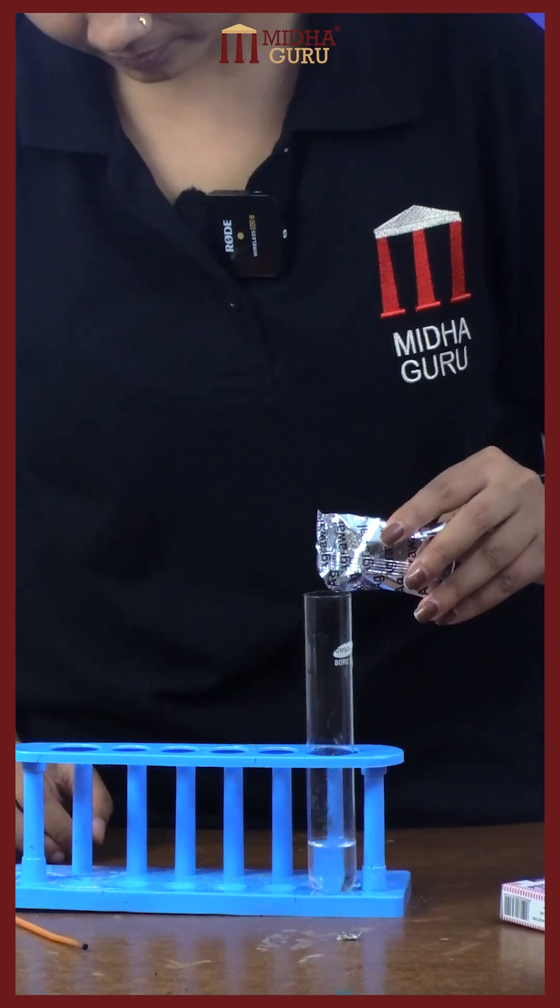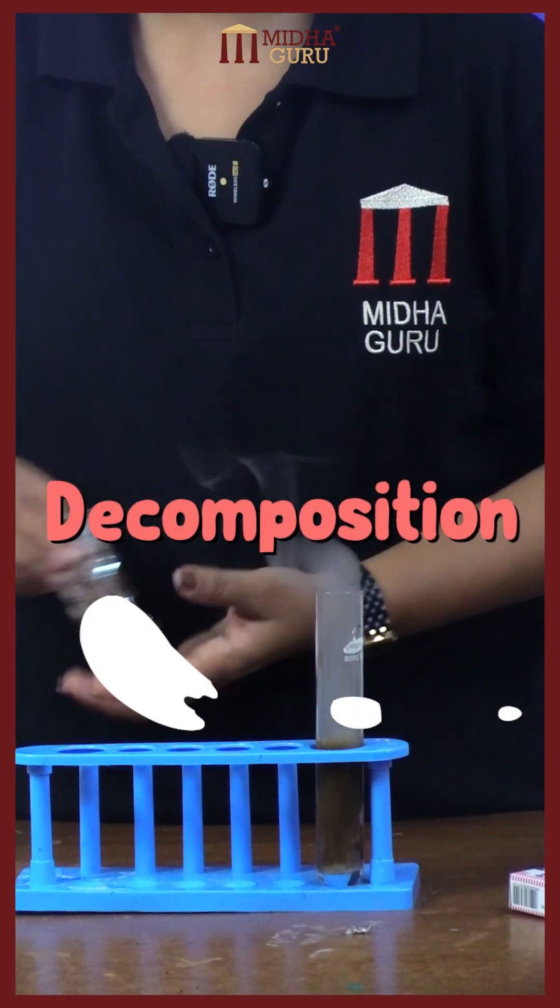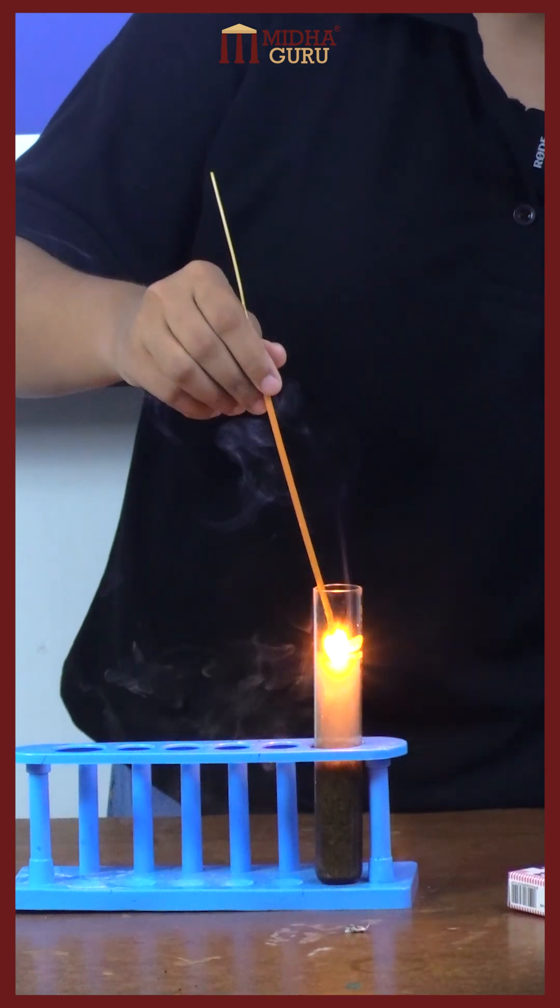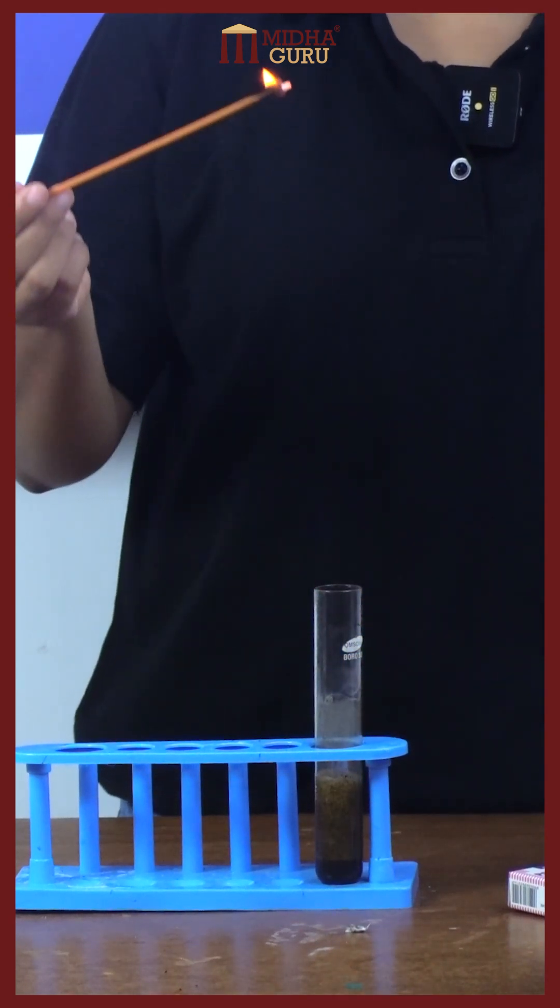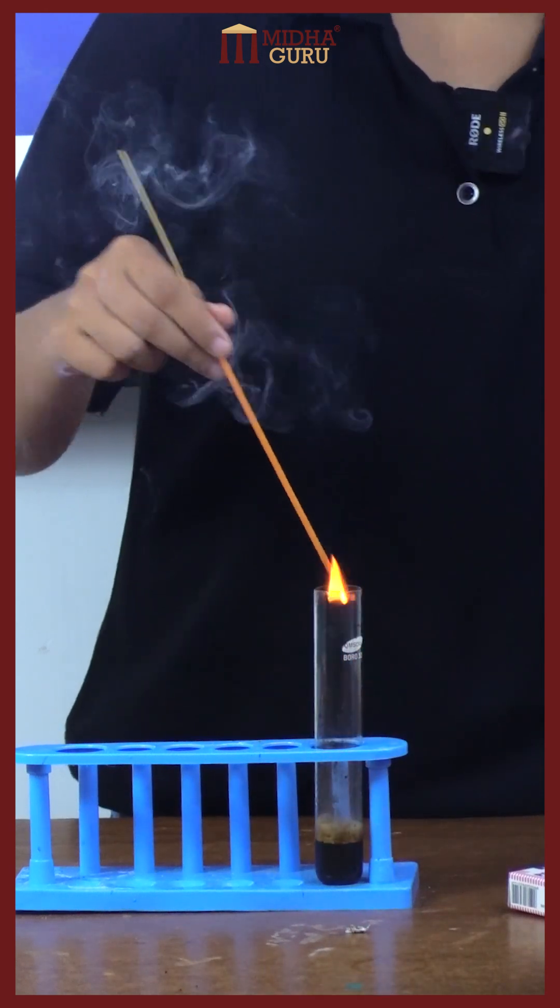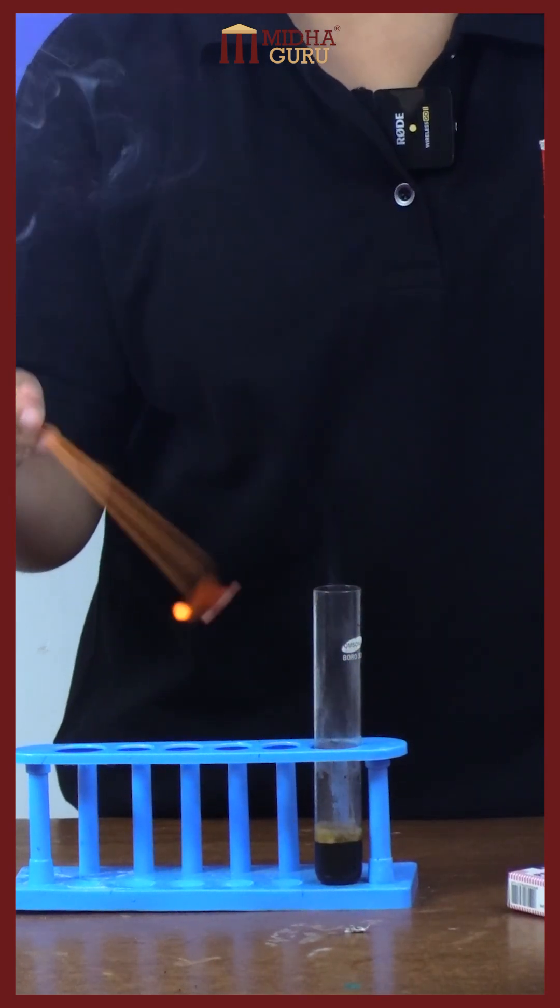The reaction that you see here is a type of decomposition reaction going on in the test tube, and it is highly exothermic, so it is not recommended to do this at your home. When I bring a lit incense stick near the test tube, it lights up again. In this decomposition reaction, there is evolution of oxygen gas and water vapor.